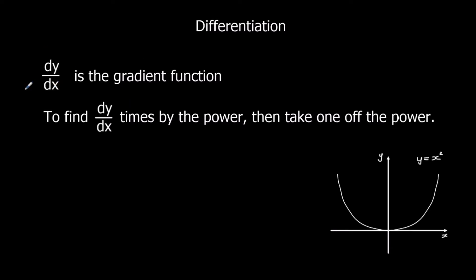When we differentiate we get dy/dx. You can think of this as a difference in y over difference in x — like change in y over change in x that we use for straight line gradients. We call the gradient function dy/dx. To find dy/dx, we times by the power then take one off the power.